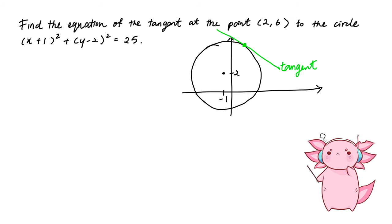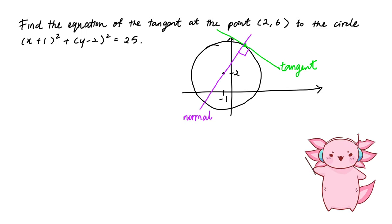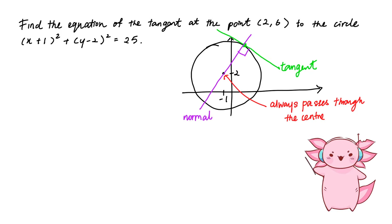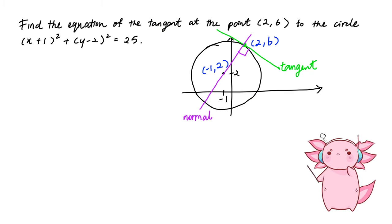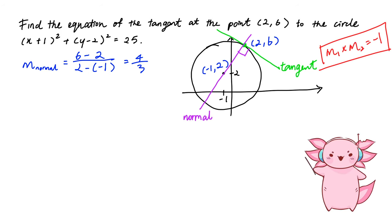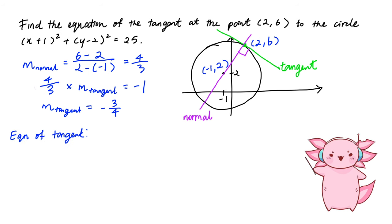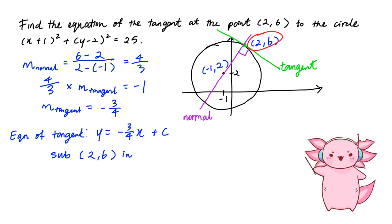A tangent touches the circle at one point, and a normal is perpendicular to the tangent — like a T-post meme. The normal always passes through the center. To find the equation of the tangent: the normal passes through (−1, 2) and (2, 6), giving gradient 4/3. Using M₁ × M₂ = −1, the tangent gradient is −3/4. Substituting point (2, 6), we find the equation of the tangent line.